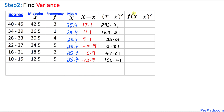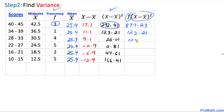In the next column we multiply the frequency f by (x minus x̄) squared. Multiplying each frequency by its corresponding squared difference gives us: 877.23, 123.21, 104.04, 4.05, 95.22, and finally 832.05.